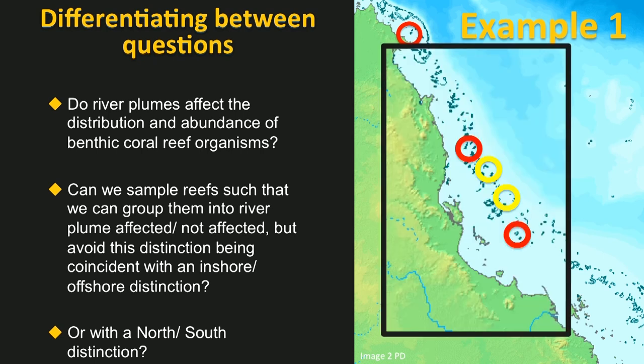Here, I hope to find satellite images that would show the plume extending to the red sites but not to the yellow sites. However, this may not always be possible. Furthermore, your interest in river plumes may be tied to the effects of either nutrients, salinity, sediment, or pesticide concentrations on the subject. It may not be possible to find sites in the field that isolate these different drivers but otherwise have similar background features. This is where manipulative experiments come into their own.